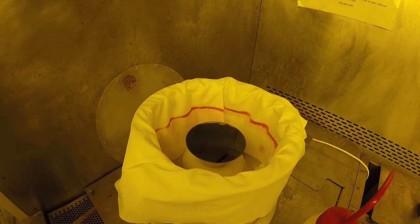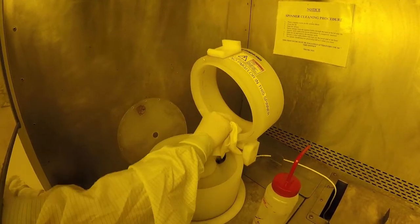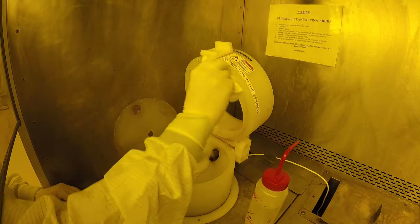After coating all your samples, thoroughly clean the inside of the spinner bowl with the allowed solvent and polyester wipes. Always leave the spinner in a clean condition after you are through.